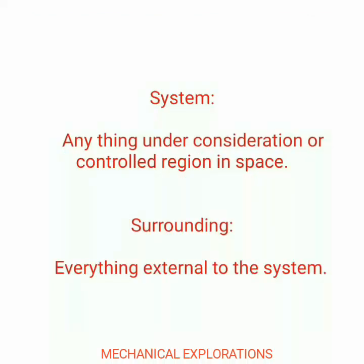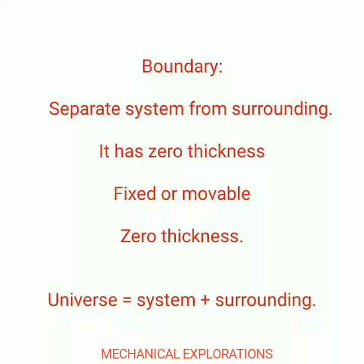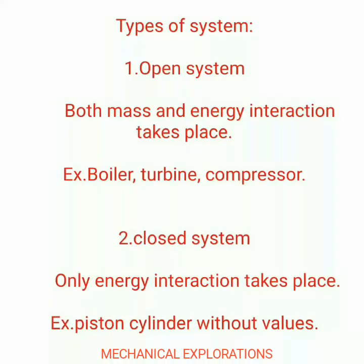Coming to system — anything under the consideration of a control region in a space is assumed to be a system, and everything external to the system is considered to be surroundings. Coming to boundary: it is what separates the system from its surroundings. Its main parameters are zero thickness, and it can be fixed or movable.